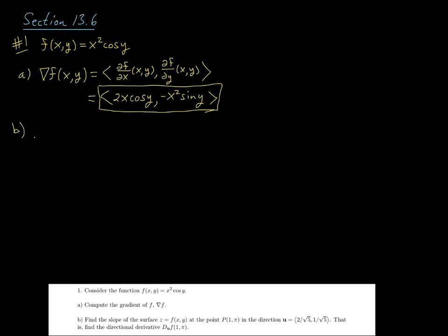For part b, it says find the slope of the surface z = f(x,y) at the point P whose coordinates are (1, π) in the direction u whose components are 2/√5 and 1/√5. That is, find the directional derivative of our function f at (1, π) in the direction of u.